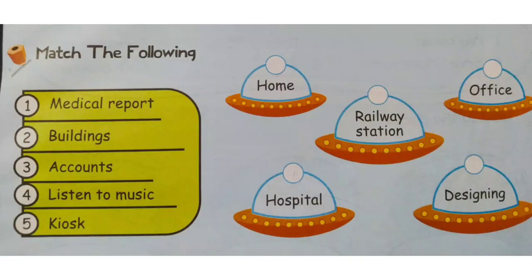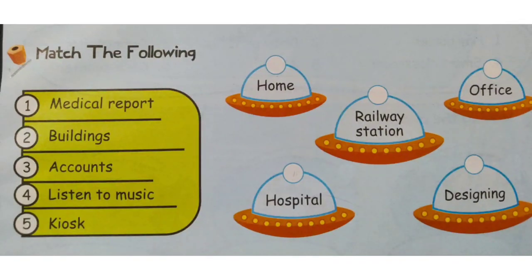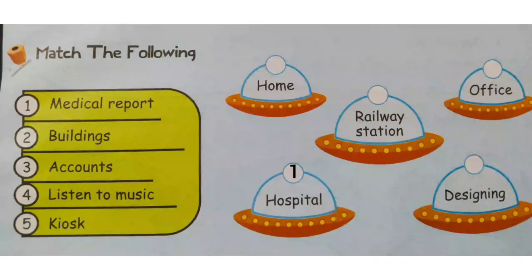Next, let's have a look at match the following. First one is medical report. From that word itself it is understood — it is being used in hospital, so you have to write F-one there. Next, buildings can be matched with the word designing. So you write F-two in that circle. Designing buildings.